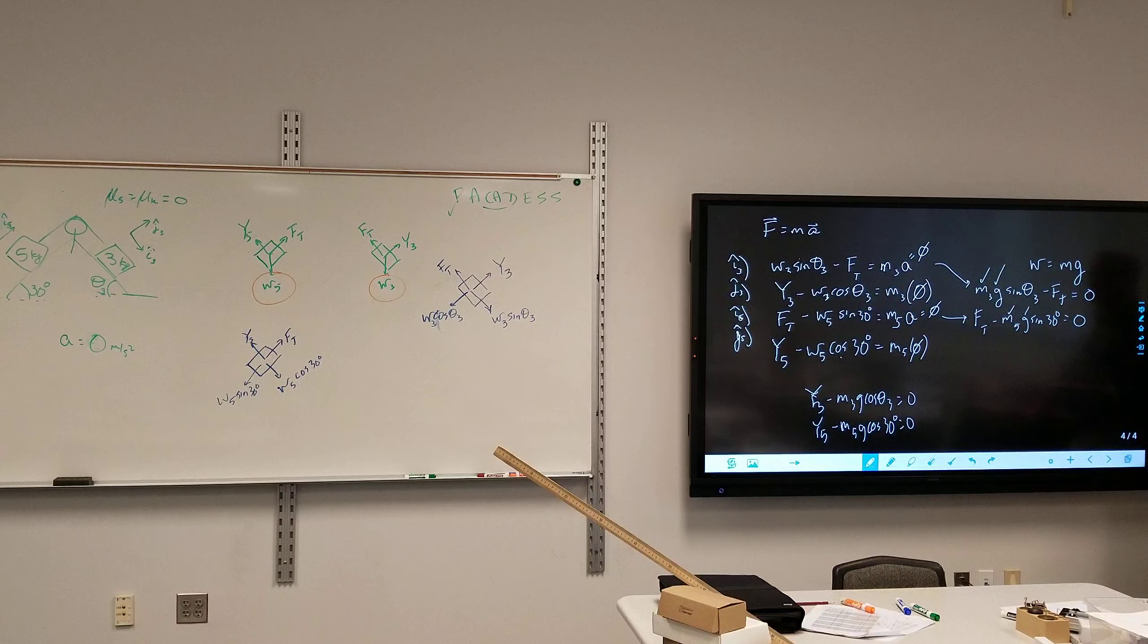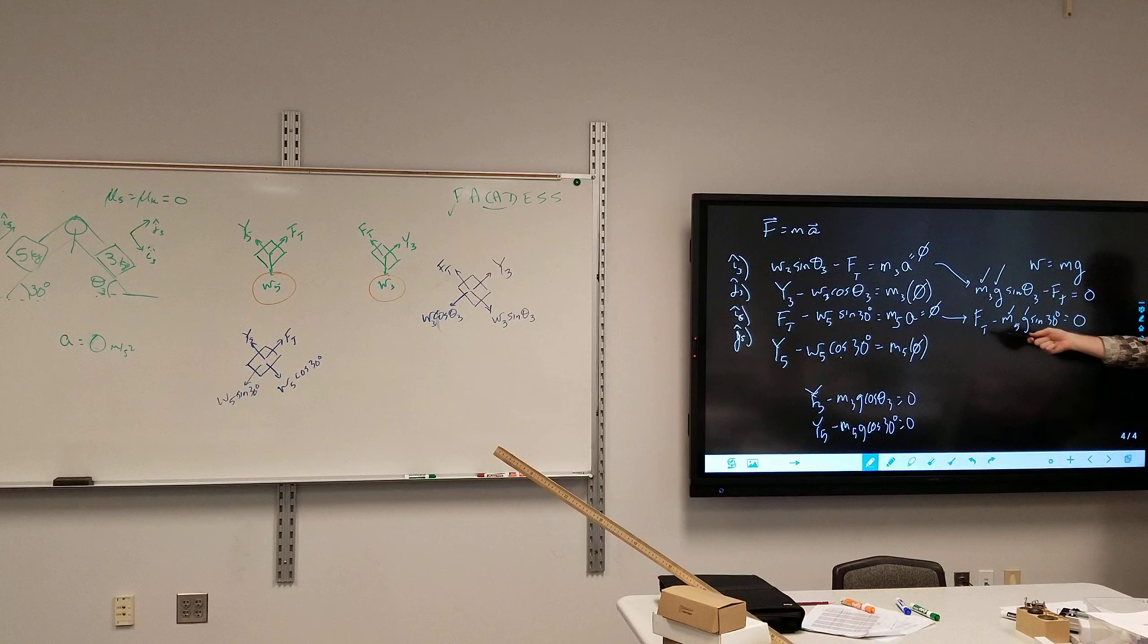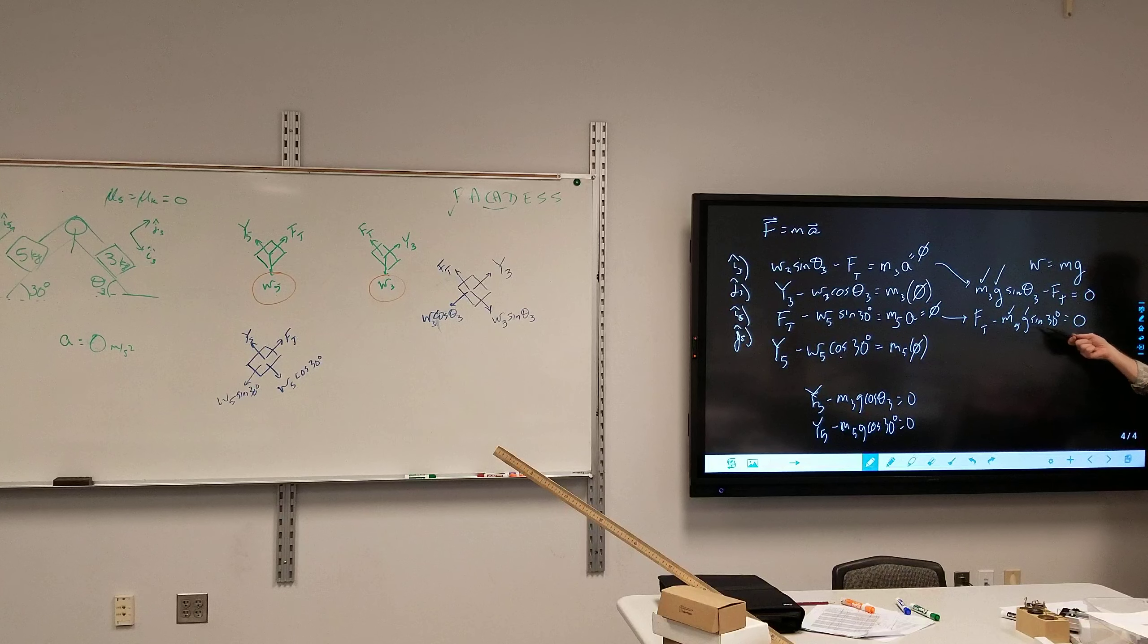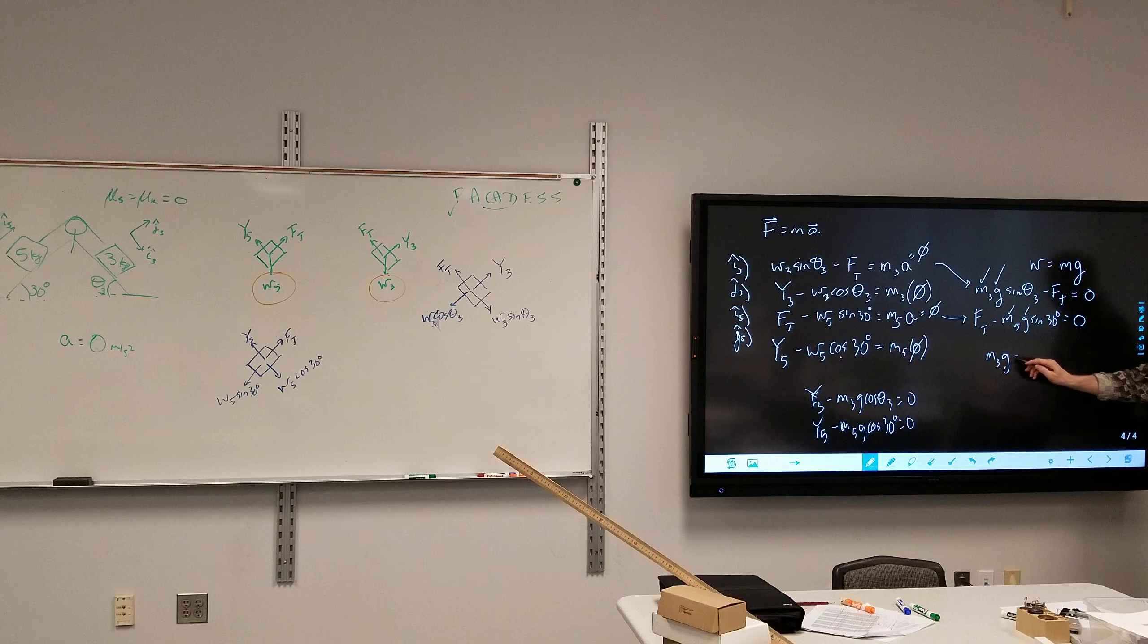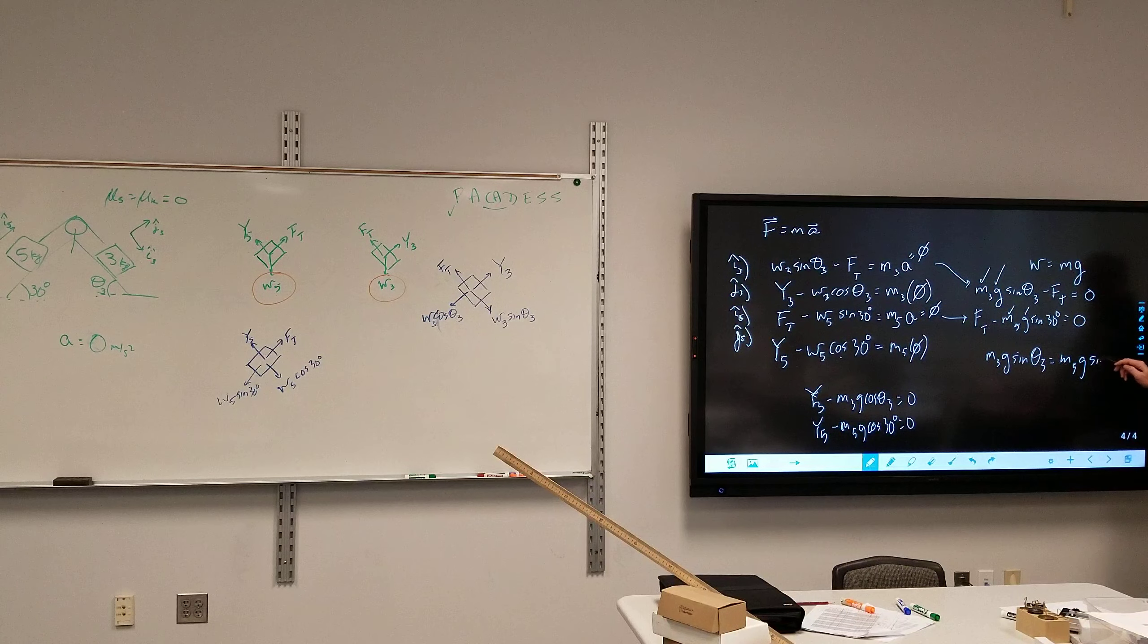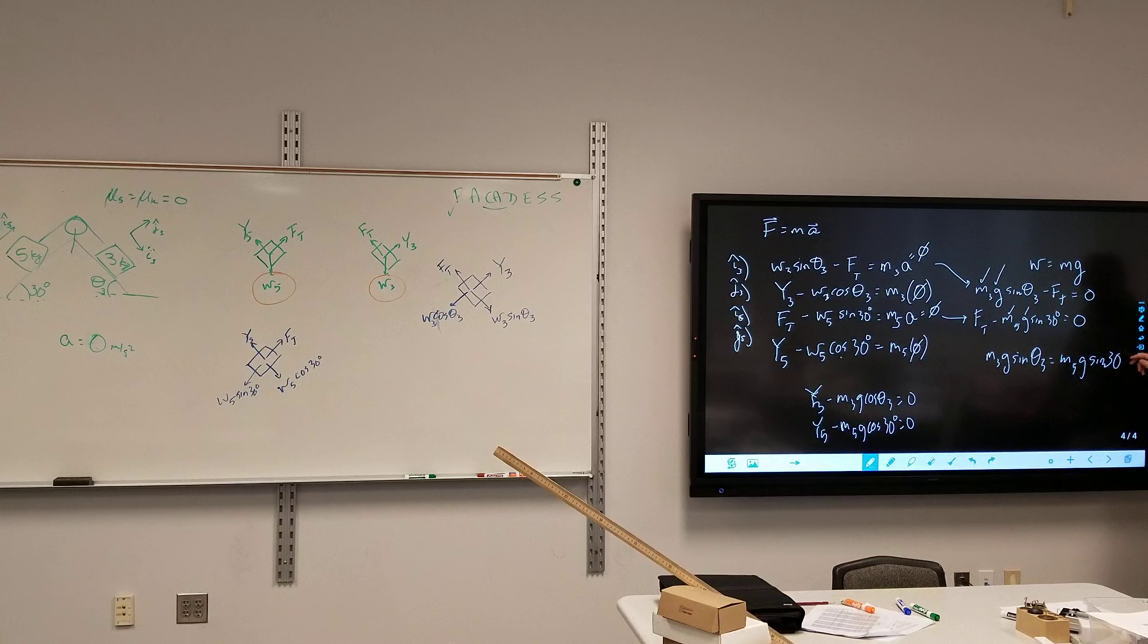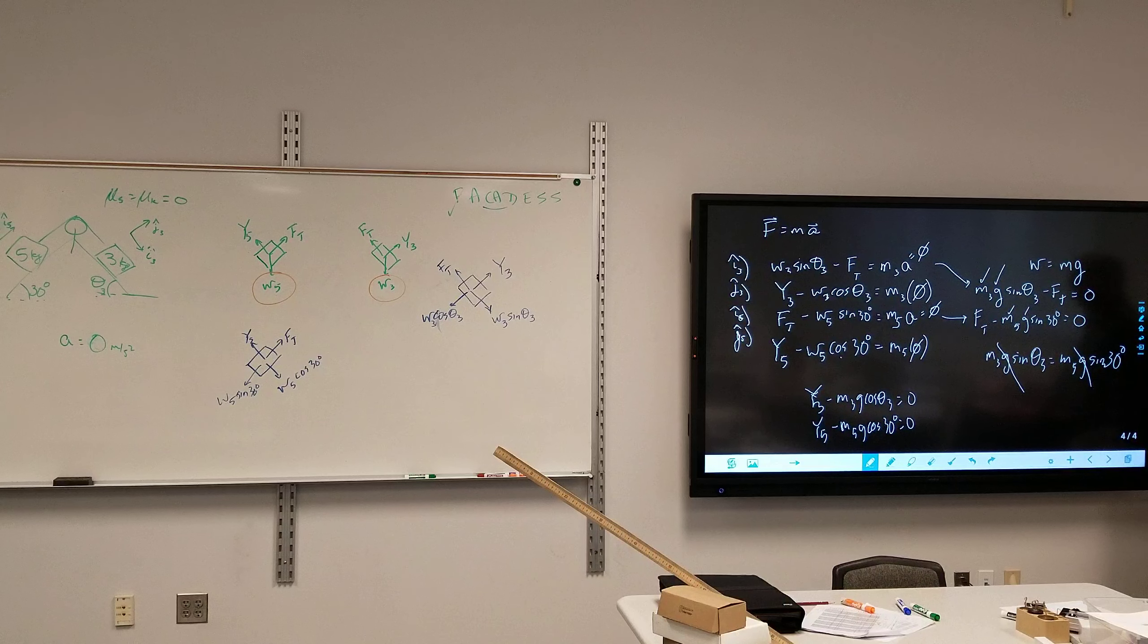Well, it's in equilibrium, so I know M3g sine theta 3 equals tension. And from this equation, our tension is equal to M5g sine 30 degrees. So M3g sine theta 3 equals M5g sine 30 degrees. G cancels out.